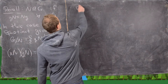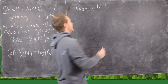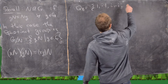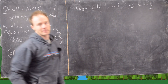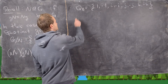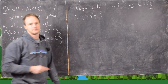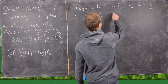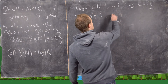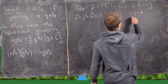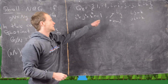Today we want to consider the quaternion group Q8, which is made up of eight elements: 1, -1, i, -i, j, -j, k, -k. It satisfies the rules: i² = j² = k² = -1, and i·j = k while j·i = -k.